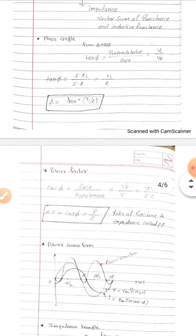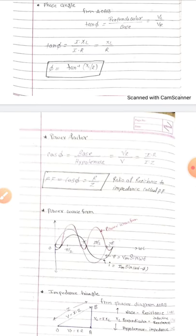Now I want to discuss power factor. From right-angle triangle OAB: cos(φ) = base/hypotenuse = VR/V. Since VR = I·R and V = I·Z, the I terms cancel, giving power factor = R/Z. So the power factor is the ratio of resistance to impedance. Another definition: power factor is the cosine of the angle between voltage and current. Both definitions are correct.